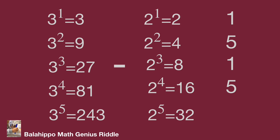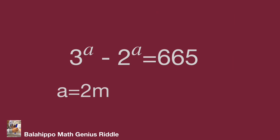Back to our given information: the value is 665, and the last digit is 5. To meet this result, A must give a last digit of 5, which occurs when A is even — for example, 3 squared minus 2 squared or 3 power 4 minus 2 power 4. This tells us the index A is an even number. So we define A equal to 2M, where M is an integer.